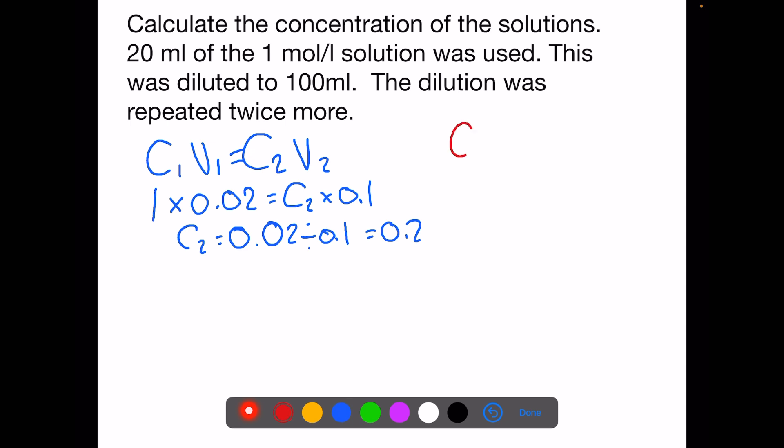We're going to repeat this twice more. C1 is now the new concentration and V1 is the amount that we're going to use to dilute. C2 is the concentration we're trying to find and V2 is the dilution volume.